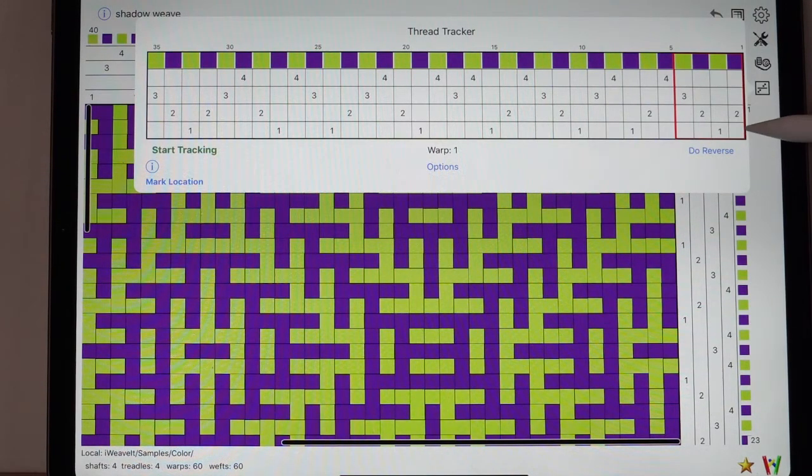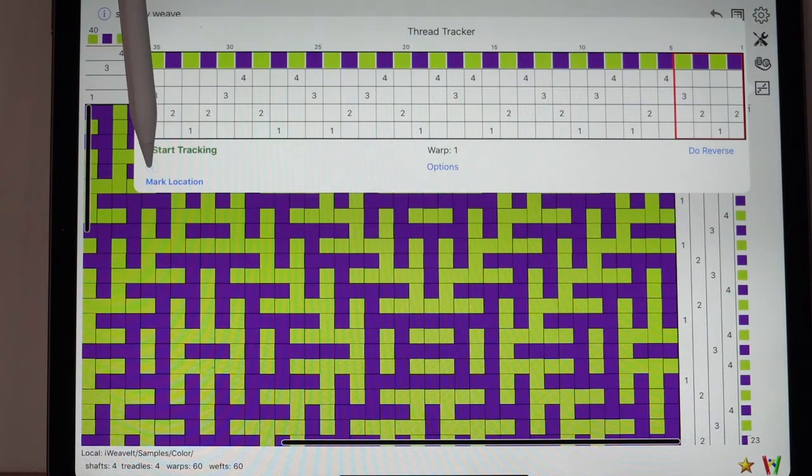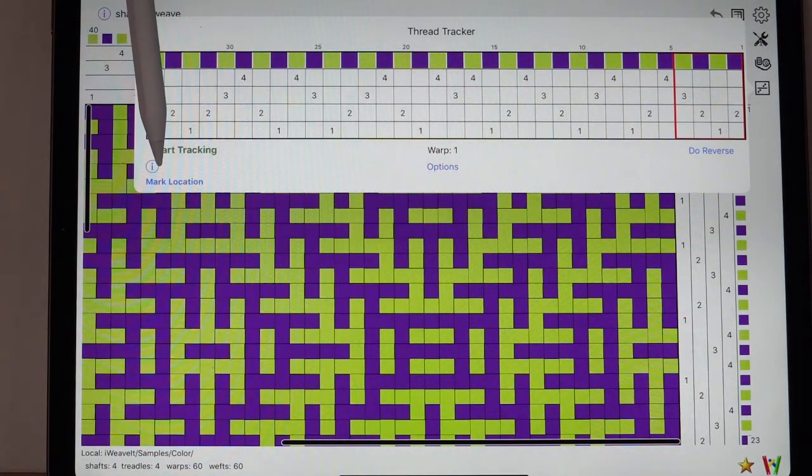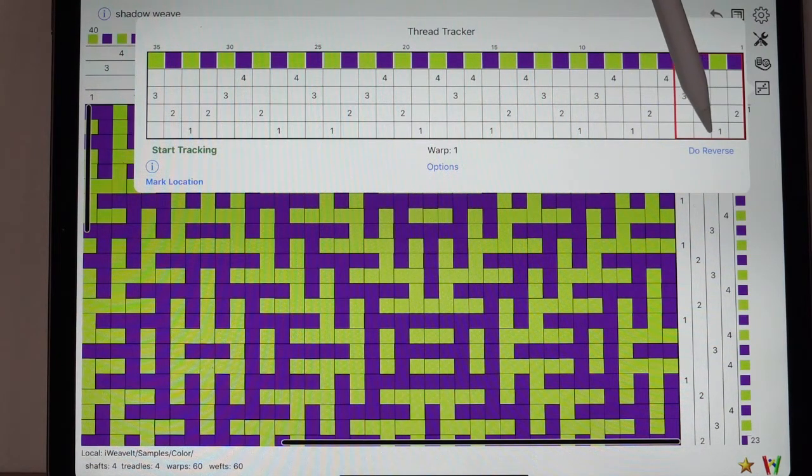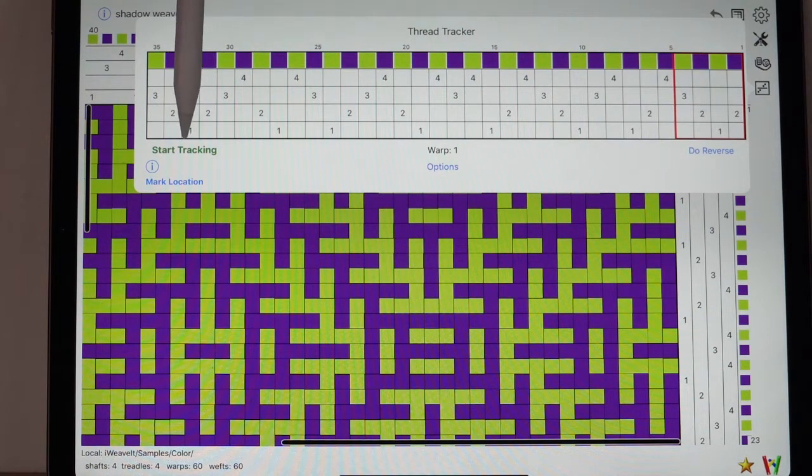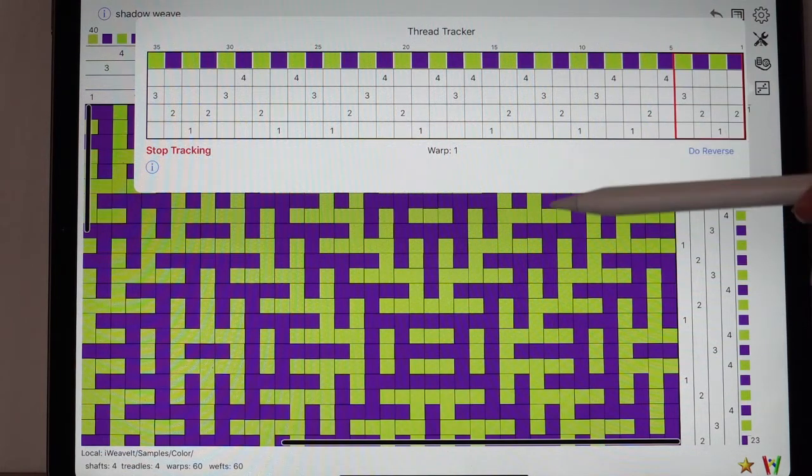You will see a screen displayed across the window with your threading in it. The red box shows you your current position and the threads that you want to thread. You will notice the start tracking. That's where you press to start your tracking. The info shows you information about how to use this. Mark location is for checking your yarns. We'll show you how to do that in a few minutes. Here's your options and there's where you would pick reverse. I will pick start tracking. It turns to red. When it's red, you're in a tracking mode. You pick up four threads. You thread your two, one, two, three. Then you tap the screen anywhere.